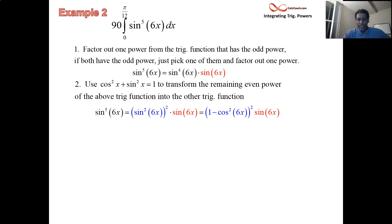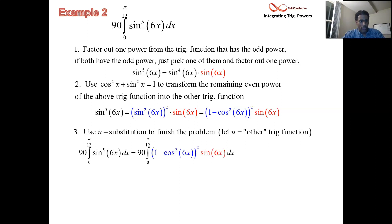We're ready to set up our u-sub. We have the original integral and then we're putting in this blue and red form where we have sine to the fourth in blue and then sine to the one in red. It's still sine to the fifth. We haven't changed anything. The integral is still 0 to pi over 12. It's still a 90 outside. It's still an integration in x. But we're set up perfectly now to do a u-sub.